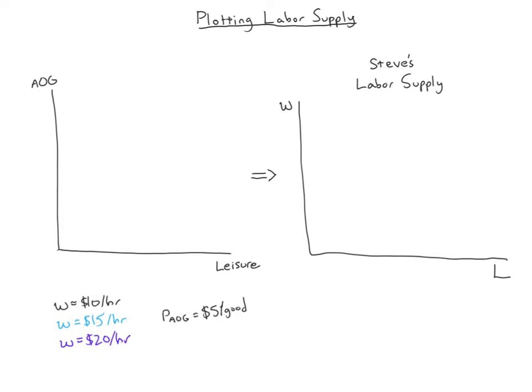Let's start with a wage of ten dollars per hour. The price of all other goods is five dollars per good and won't change. The maximum leisure is 24 hours, so that point on the x-axis stays fixed. The slope of the budget constraint is the real wage w over p, so ten dollars over five dollars equals two goods per hour. Working all 24 hours gives a maximum of 48 goods, establishing our initial budget constraint.